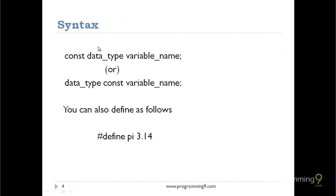The syntax for declaring a constant is: const data_type variable_name. The data type can be int, float, double, char, short int, long int, long long int, whatever it may be. You can also alter the position, writing data_type const variable_name. Both are completely valid.